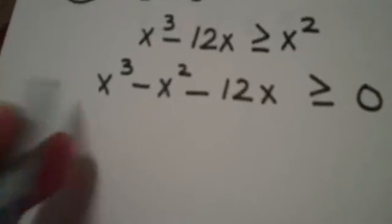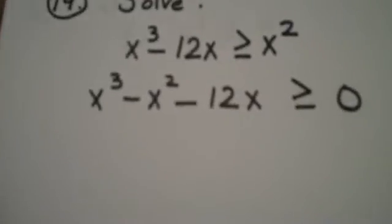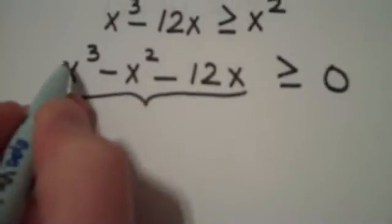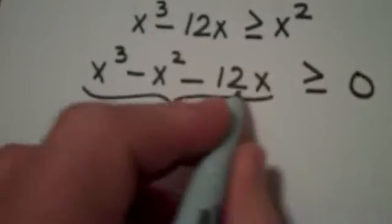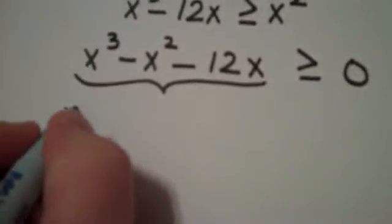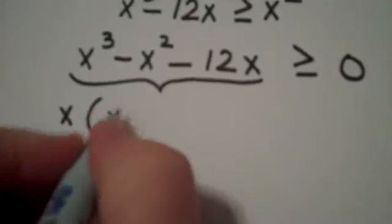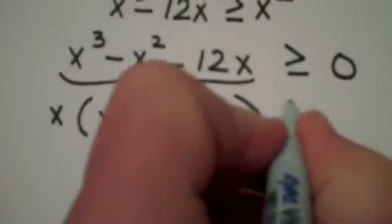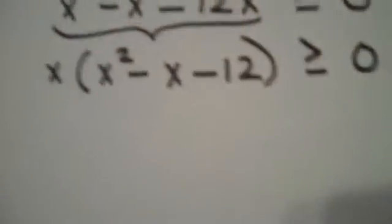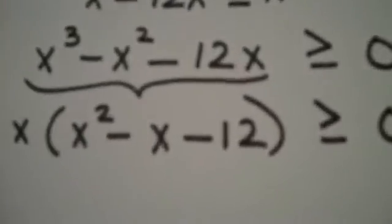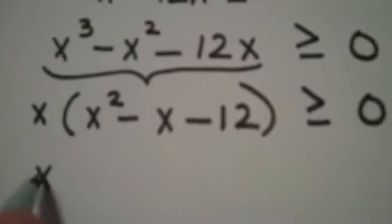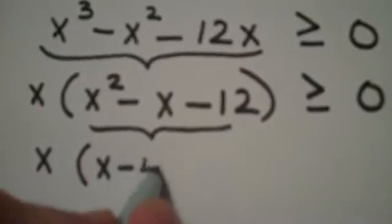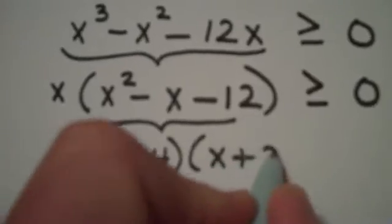Now, the way the region testing method works is you have to locate the zeros of, if this were a function, you need to locate its zeros. If I factor this expression, I can start by factoring out an x, which leaves me inside with x squared minus x minus 12. And if I continue factoring that expression, this trinomial factors as quantity x minus 4, quantity x plus 3.